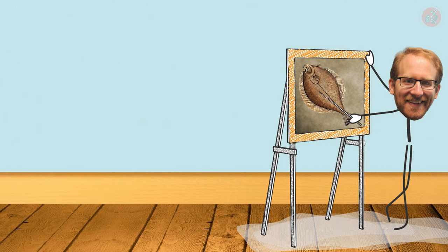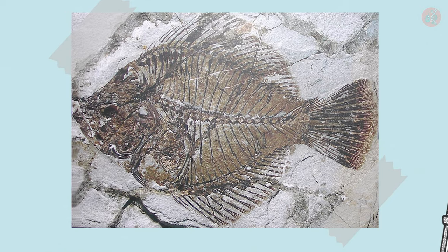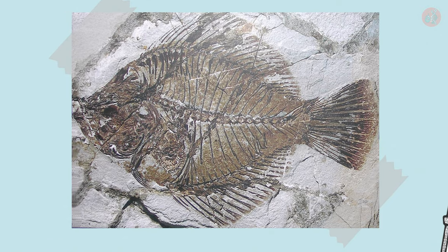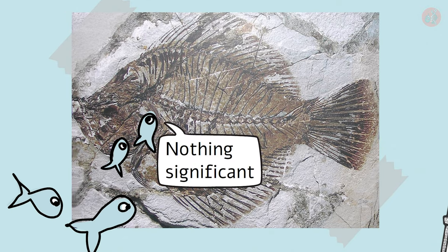The key was in the fossils of a fish called amphisteum, which lived 50 million years ago. From the fossils, it seemed that these were ordinary-looking fish, but Friedman thought differently.